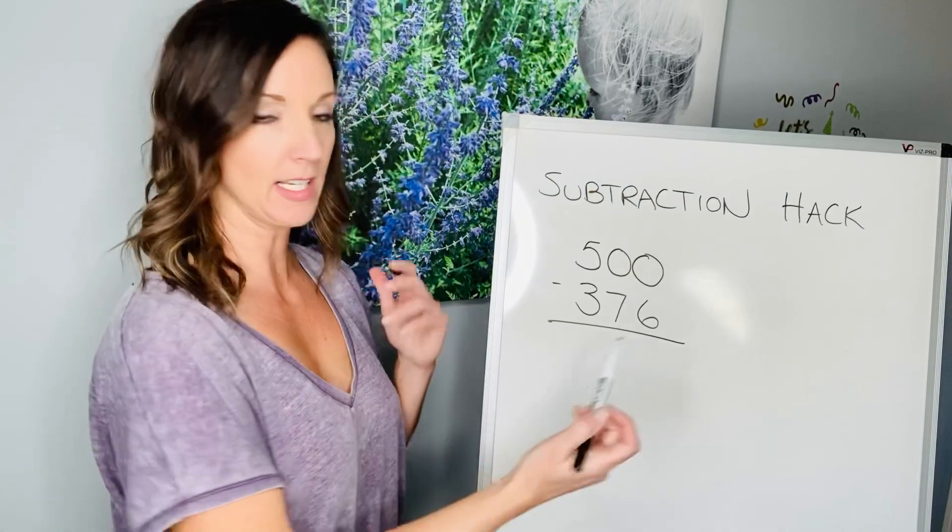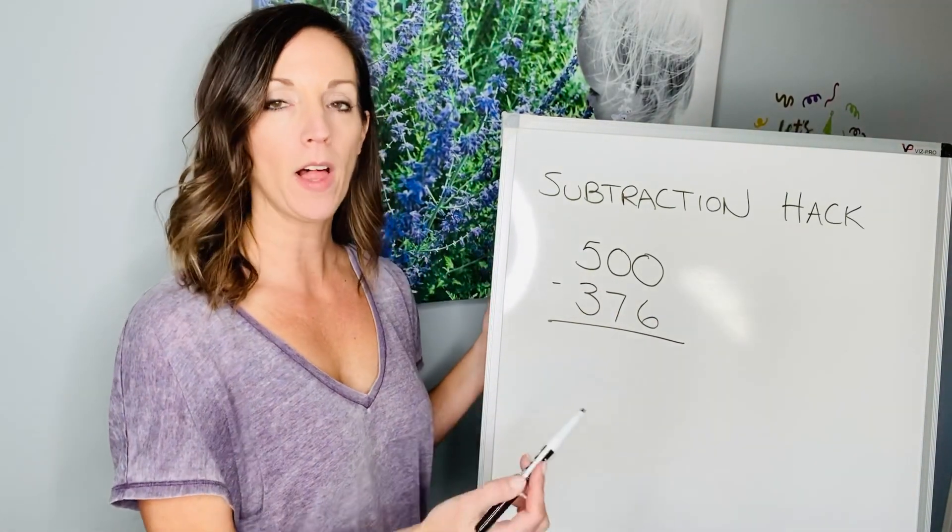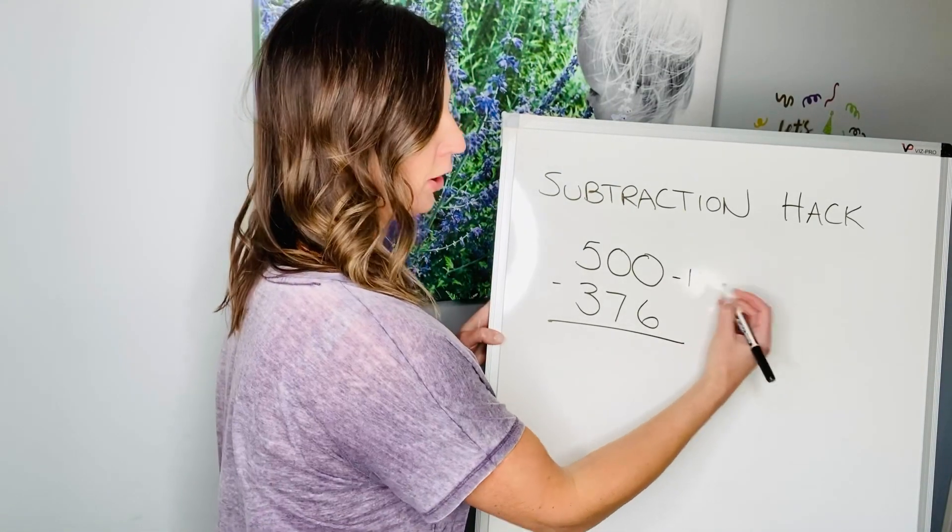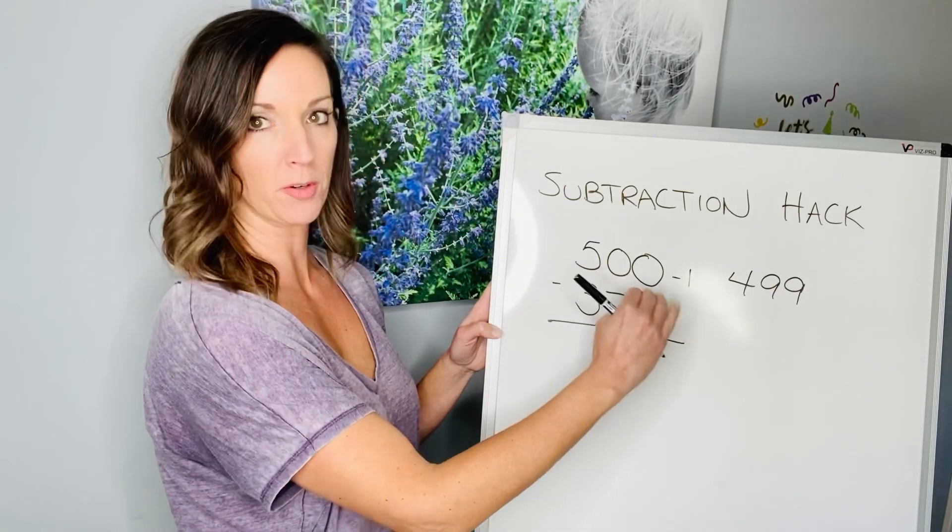So, let's assume this is money. 500 minus 376. Well, what's $1 less than 500? So, we're going to take $1 away, and we're going to have $499, right? If I take $1 away from that,